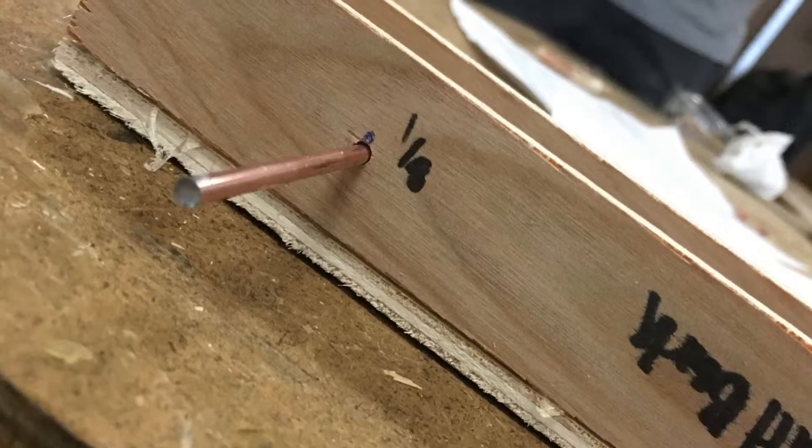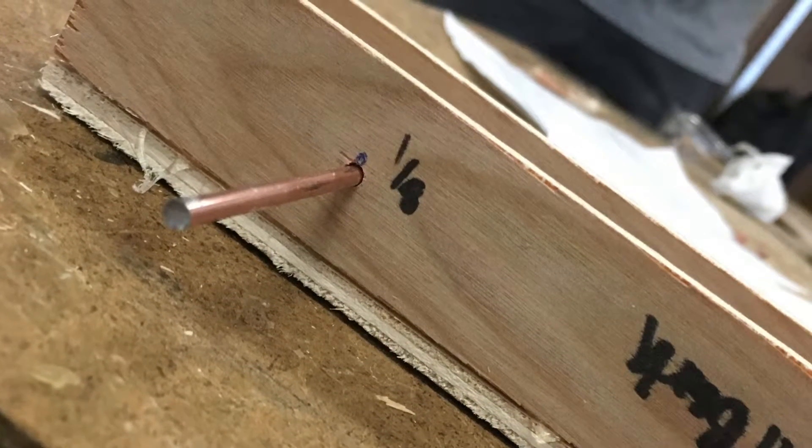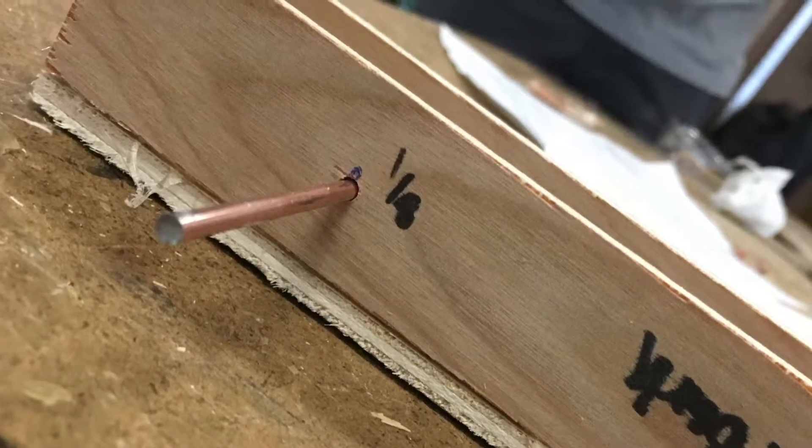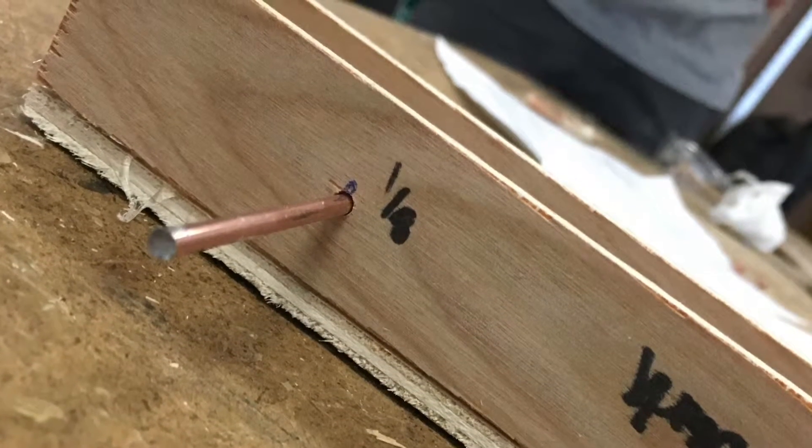The wooden axle needed a quarter inch diameter hole and the metal axle needed an eighth inch diameter hole. After that, I glued all of these pieces together as my first step in the process.